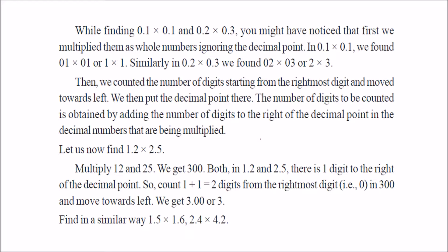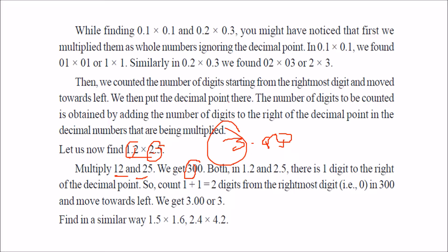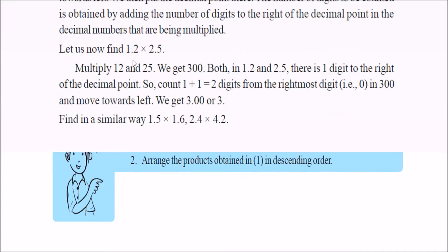When you multiply two decimal values, count the number of digits starting from the rightmost digit and move towards the left — that is where you place the decimal point. For example, 1.2 into 2.5: just multiply 12 into 25, which gives 300. There are two decimal places total, so you take 300 and place the decimal two positions in, giving 3.00, which is 3.